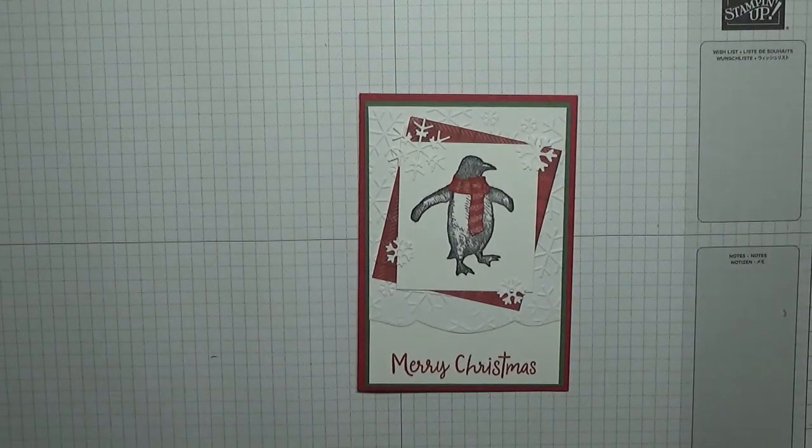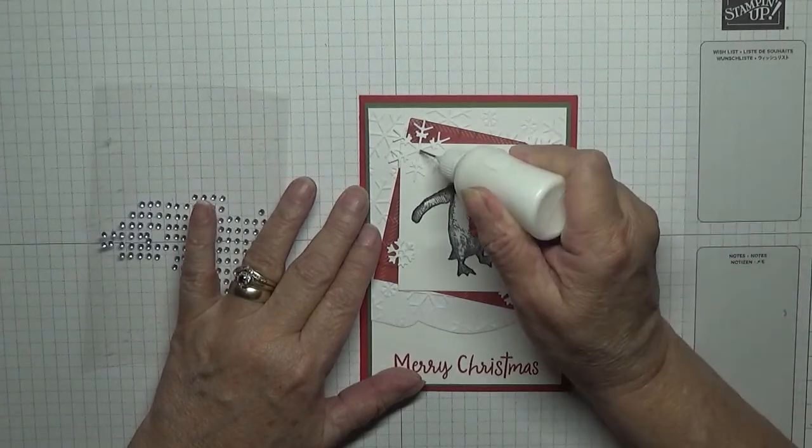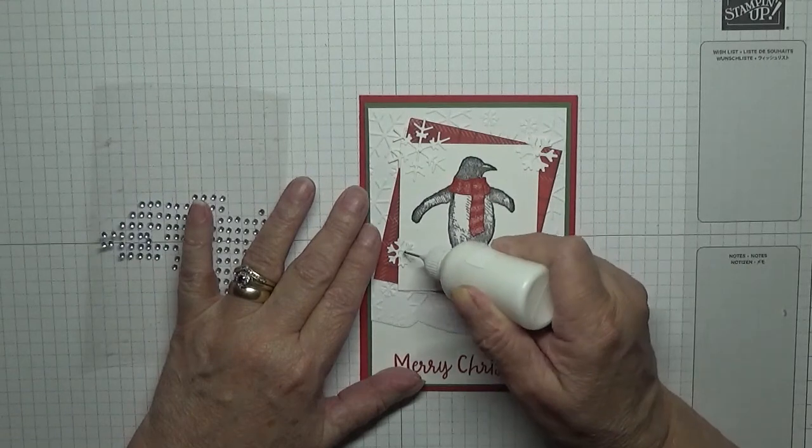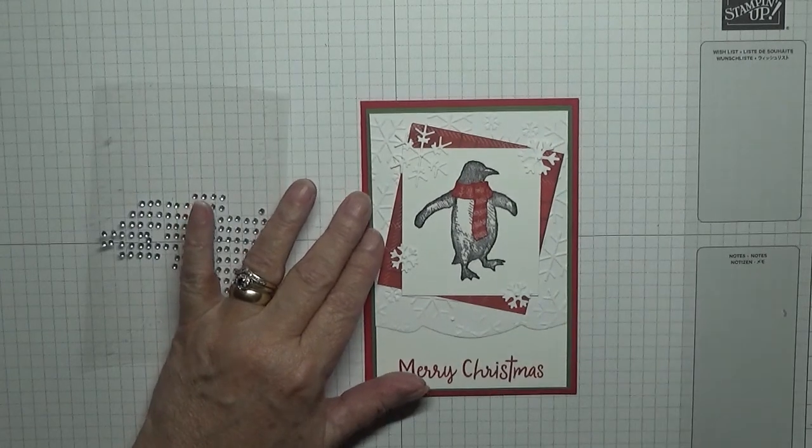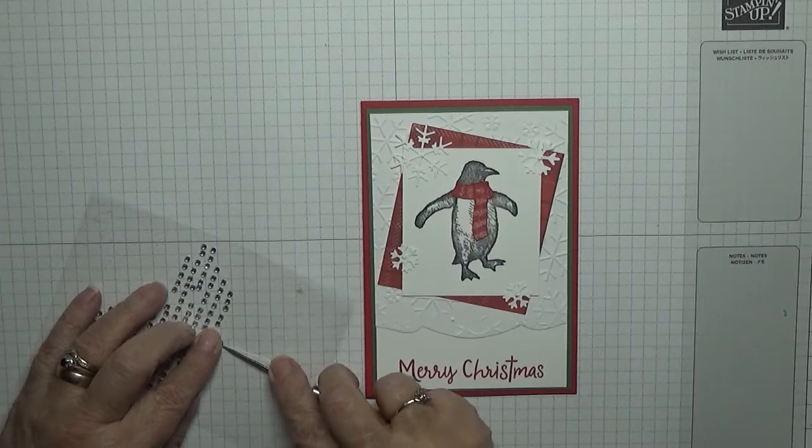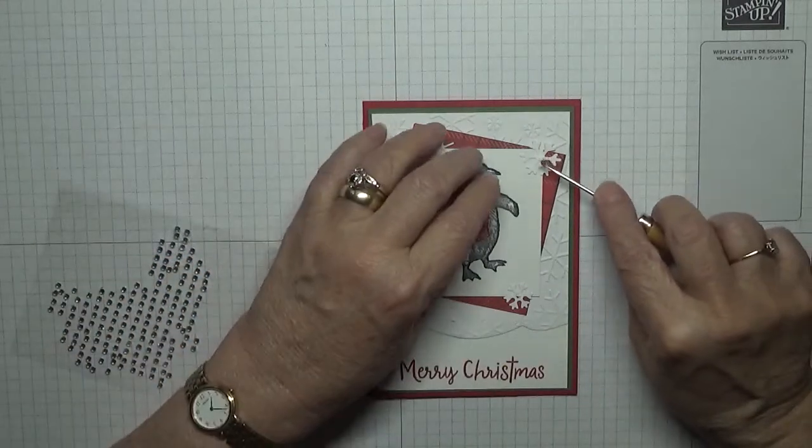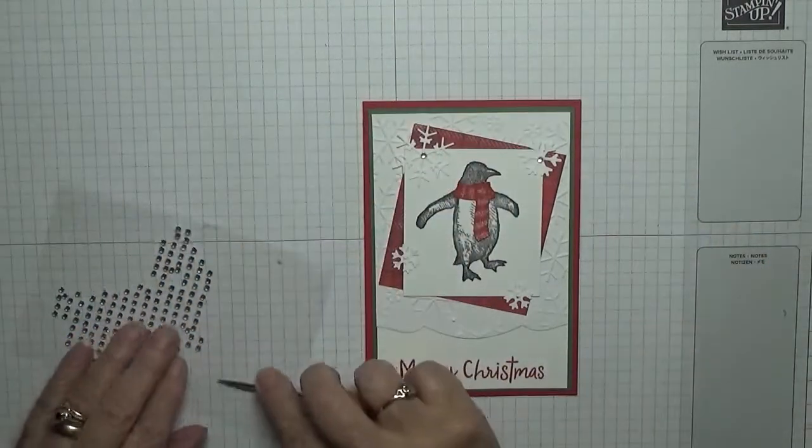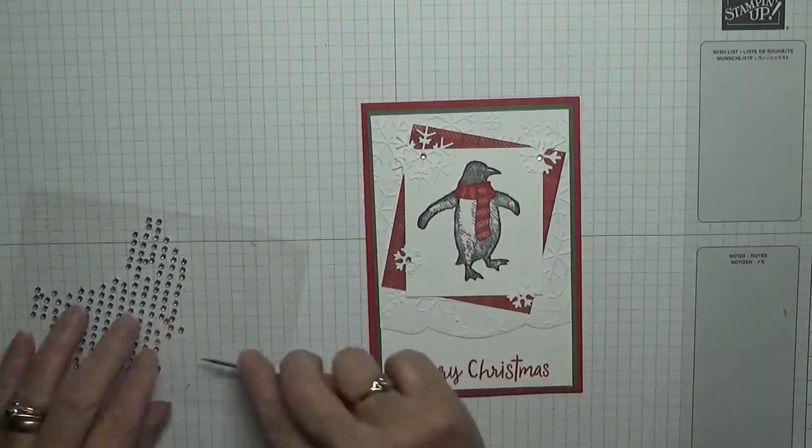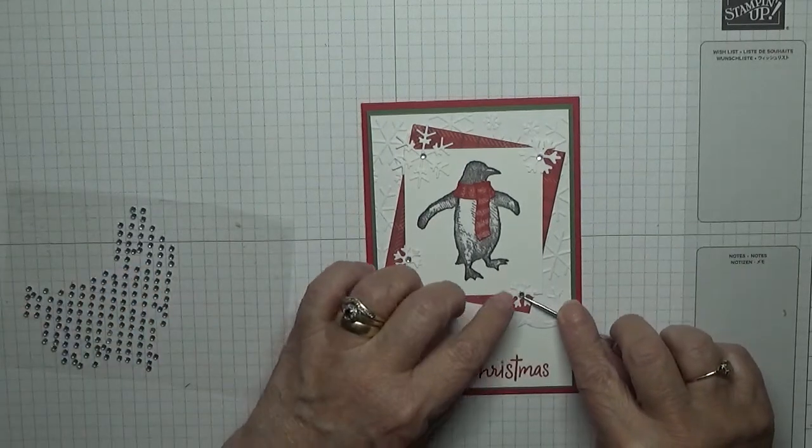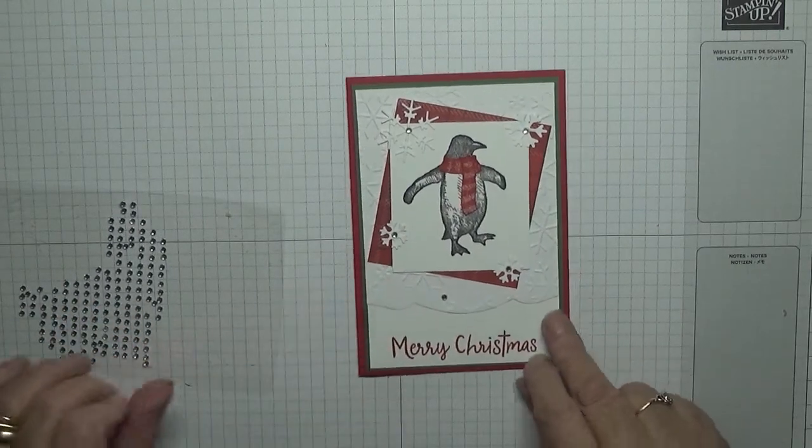All we've got left to do is some gems on the snowflakes. Now I've put four down, so I'm going to have to put an odd one there. I can't have four snowflakes, I'm afraid. Four snowflakes, four gems.